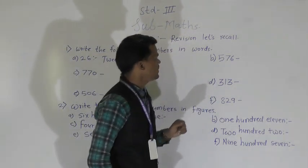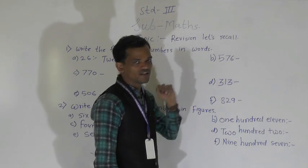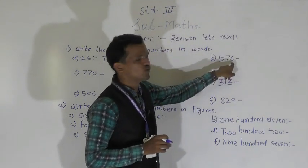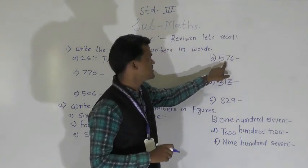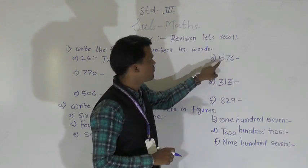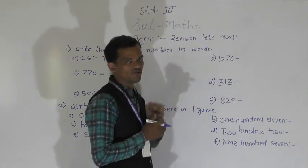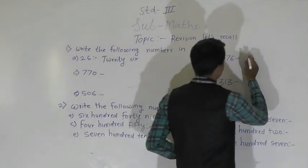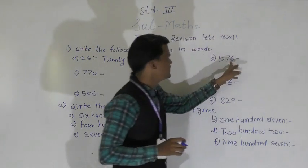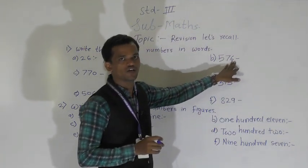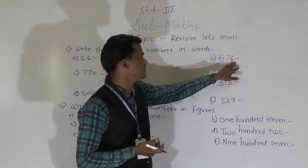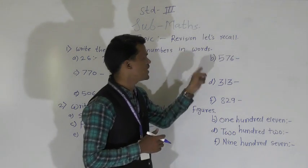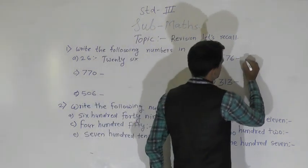Next number: 576. In this number, at the ones place 6 is here — 6 ones means 6. Then 7 tens means 70 and 500. So this number is 576. Only see the places of the digit and then identify the number: 500, 7 tens and 6 ones. So write the spelling of this number: 576.